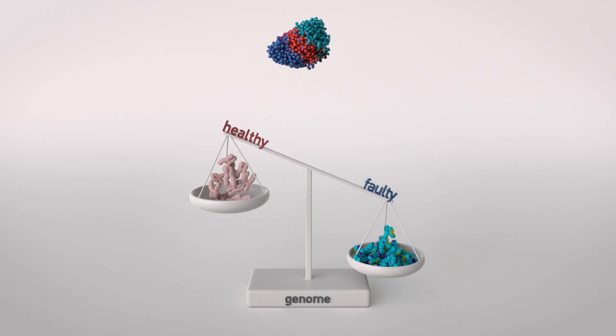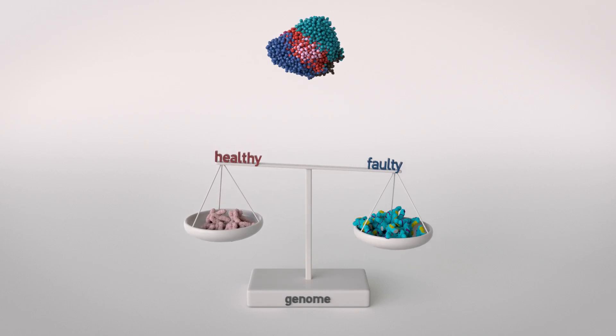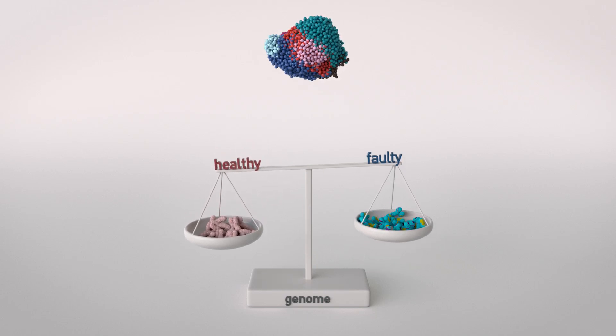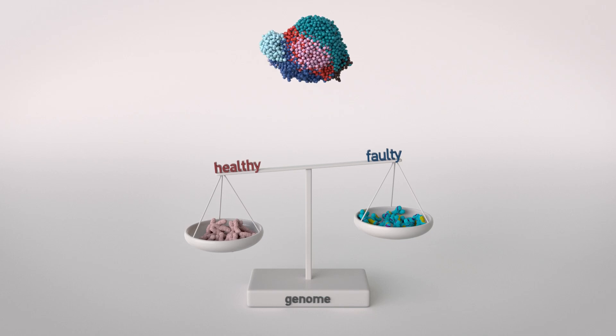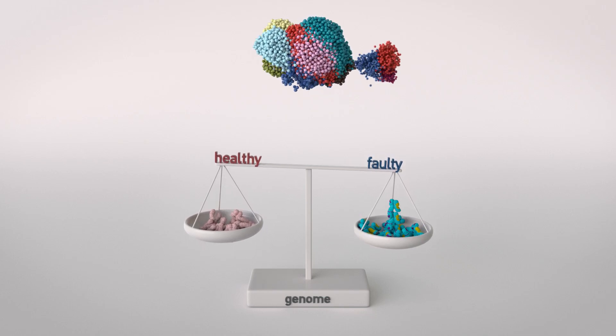So the tumour environment selects cancer cells that stay in the goldilocks zone where the amount of genetic instability is just right for them to keep evolving and escape treatments that suppress cancer growth.